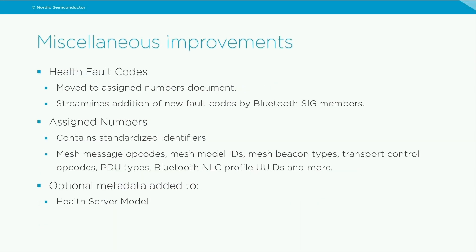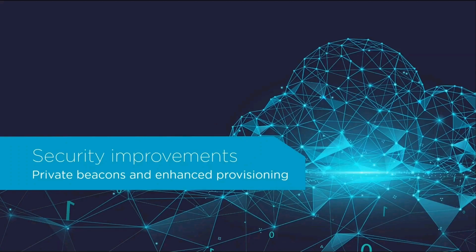As part of cleanup of the specification document, many identifier numbers are moved from the specification into the assigned numbers document, including health fault codes, message opcodes, mesh model IDs, and more. Optional metadata has been specified for the health server model to help exchange information about supported health model tests. The security architecture of Mesh 1.0 was robust and well thought through, but additional feedback from members identified further enhancements to some security aspects.